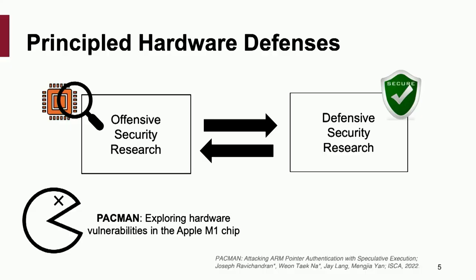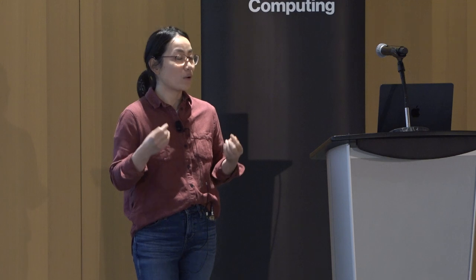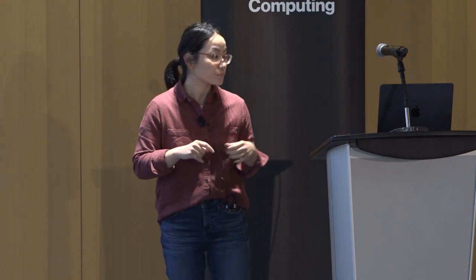Just to give a taste of our research: two years ago, we discovered the PAC-MAN attack — an attack that exploits vulnerabilities in the Apple M1 chip. Apple M1 got great popularity and is considered secure because it uses ARM's latest security feature called pointer authentication to protect programs from being tampered with. But we showed that attackers can use side channels to bypass this protection. We demonstrated proof-of-concept attacks on Apple M1, and Apple acknowledged the attack indeed works.